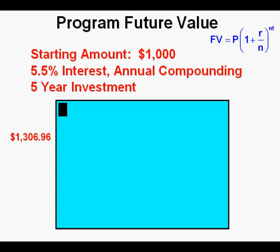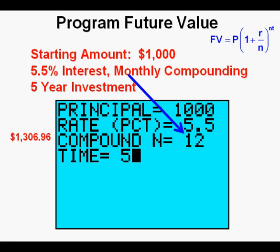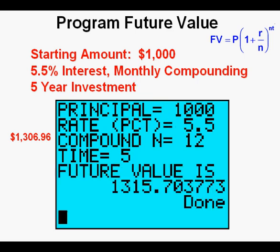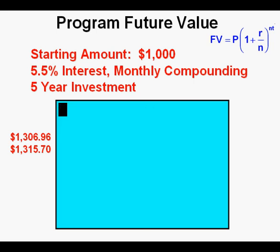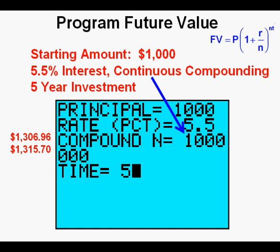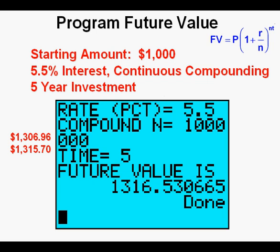Now we'll clear the screen by pressing clear. We'll leave everything the same except we'll change from annual to monthly compounding by entering 12 for N instead of 1. Press enter. This time we get $1,315.70 — about $9 more for monthly compounding. We cannot exactly do continuous compounding, but can make a very close approximation if we put in a very high number for N. I've put in 1,000,000. We get $1,316.53 for continuous compounding — less than $1 more than monthly compounding. This gives a good idea of what happens with changes in compounding periods.